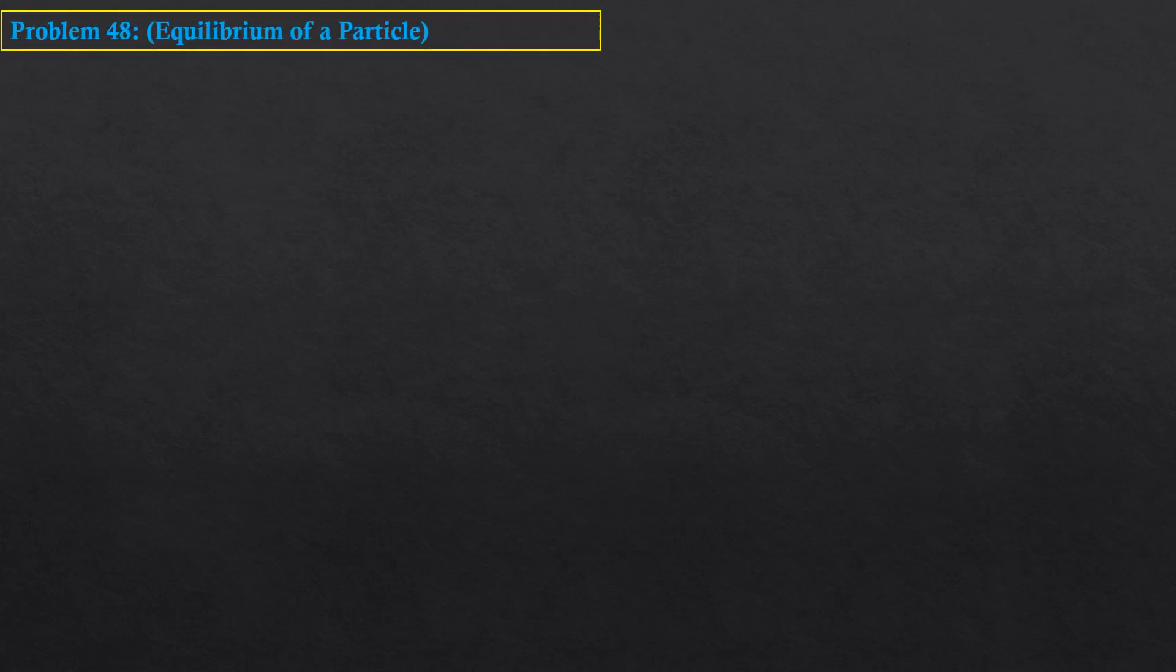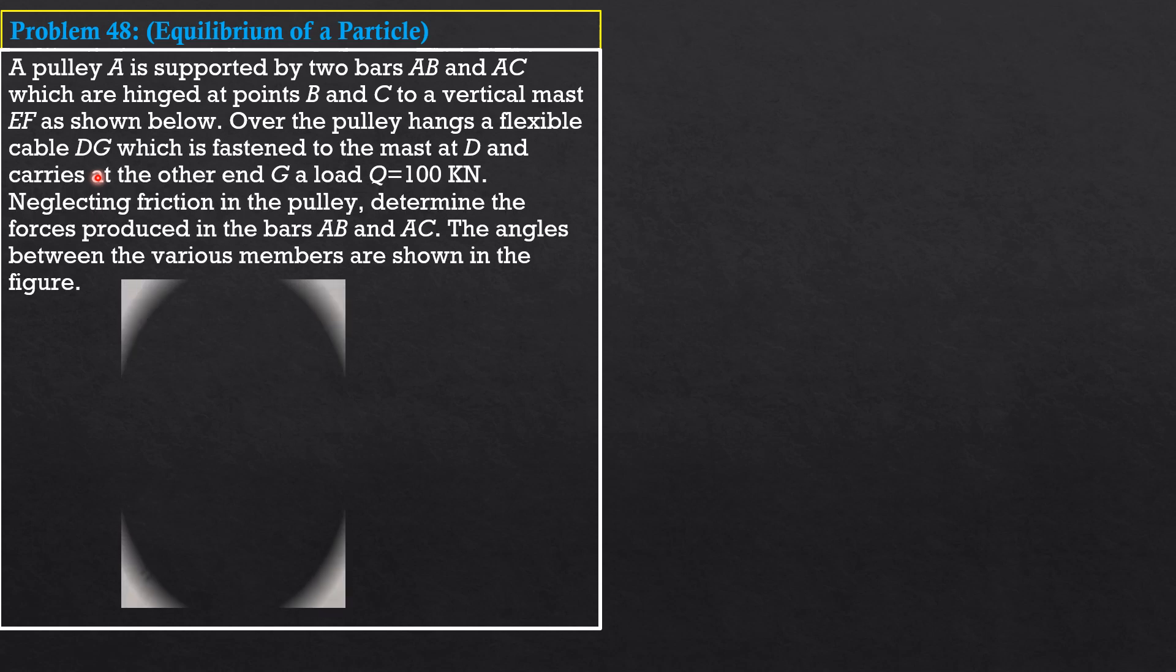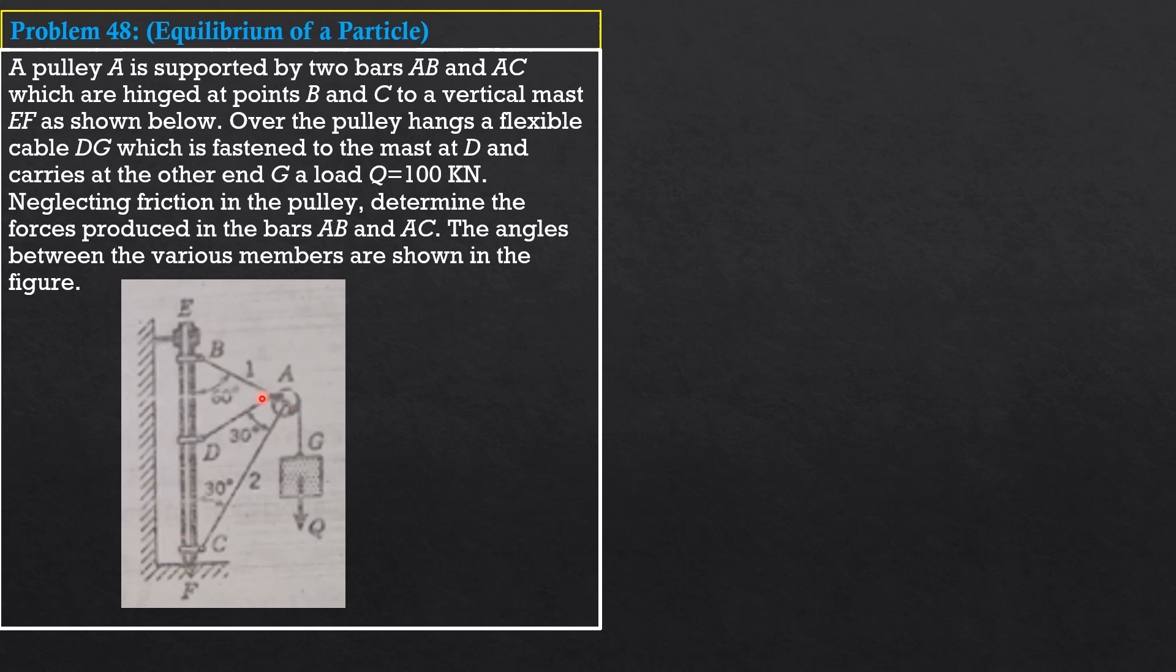Example 48 on equilibrium of a particle. A pulley A is supported by two bars AB and AC, which are hinged at points B and C to a vertical mass EF as shown below. So, we have mass EF here. We have bars AB and AC. Over the pulley, this is this A here, hangs a flexible cable DG. This is this, DG, which is fastened to the mass at D and carries the other end G, a load Q, which is equal to 100 kilonewtons. Neglecting friction in the pulley determines the forces produced in the bars AB and AC. The angles between the various members are shown in the figure.